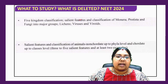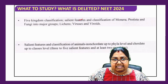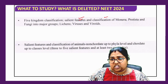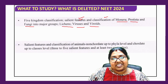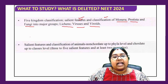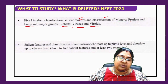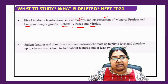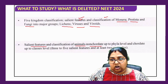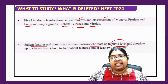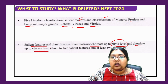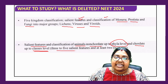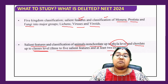From Chapter 2 onwards — Monera, Protista, Fungi, Lichens, Viruses, Viroids — everything is there, nothing is deleted. As far as the Animal Kingdom is considered, everything is there and nothing is deleted. It includes classification of animals: non-chordates up to phyla level, and in chordates you have to study up to class level. Three to five salient features with two examples is mandated as recommended by NEET and NMC.